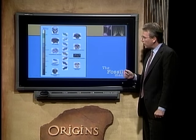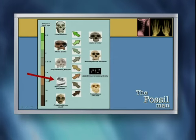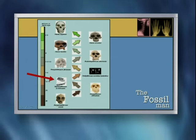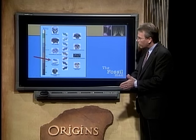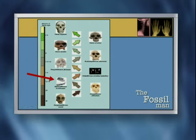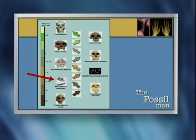Another point to make here is the age difference. If we look back on our chart, Egyptopithecus zuxus started at 28 million years ago, allegedly using the evolutionary timescale. Then we jump up to 20 million years ago with Dryopithecus africanus - that's a jump of 8 million years. Now we're going to make another jump of 8 million years and talk about a creature called Ramapithecus brevirostris. Two 8-million-year jumps without anything else in the fossil record.